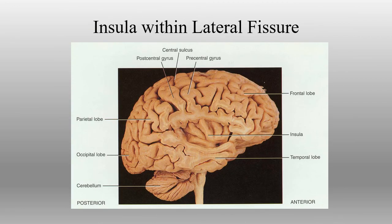The insula requires removing part of the frontal lobe, part of the parietal lobe, and part of the temporal lobe in order to see it. We have to remove part of the cerebrum in order to get that visual.